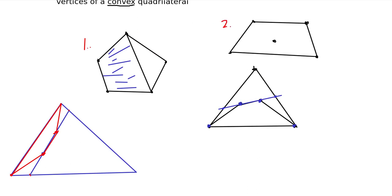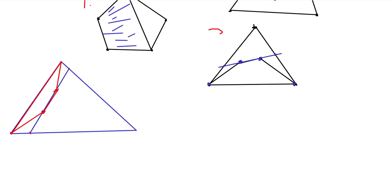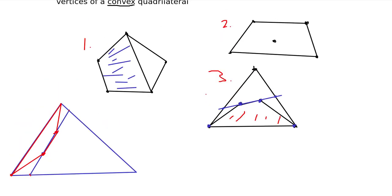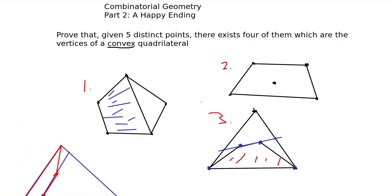The case where the convex hull is a pentagon. The case where the convex hull is quadrilateral. And the case where the convex hull is a triangle. And all of them, no matter what, will contain a convex quadrilateral. That is the happy ending problem.